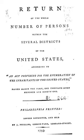Thomas Jefferson, then the Secretary of State, directed marshals to collect data from all 13 states — Connecticut, Delaware, Georgia, Maryland, Massachusetts, New Hampshire, New Jersey, New York, North Carolina, Pennsylvania, Rhode Island, South Carolina, and Virginia — and from the Southwest Territory. The census was not conducted in Vermont until 1791, after that state's admission to the Union as the 14th state on March 4 of that year.